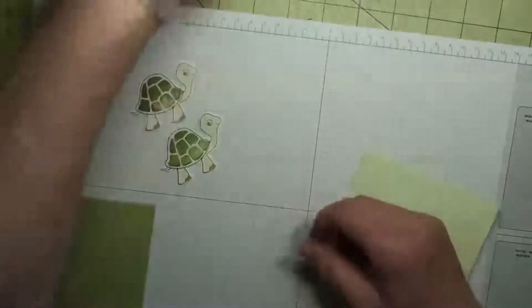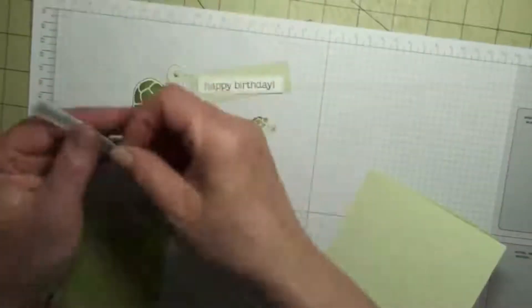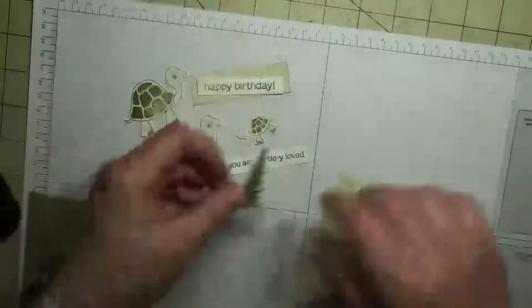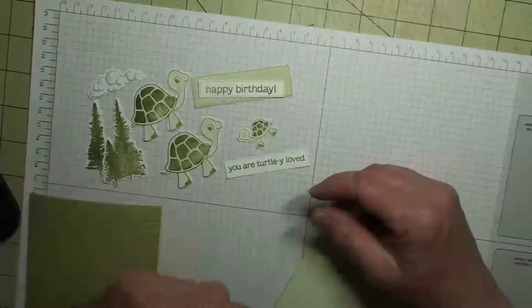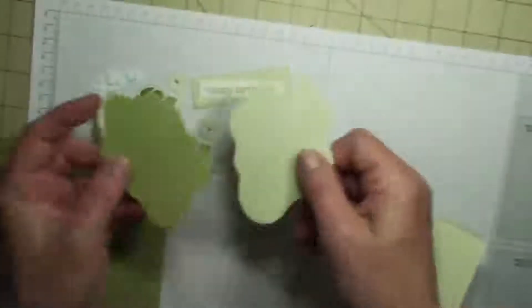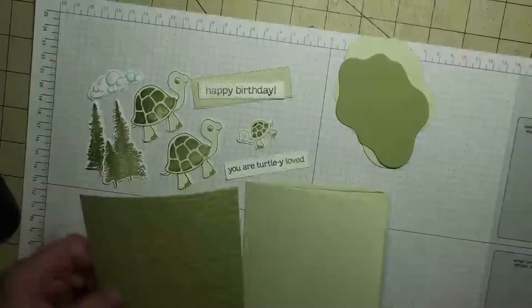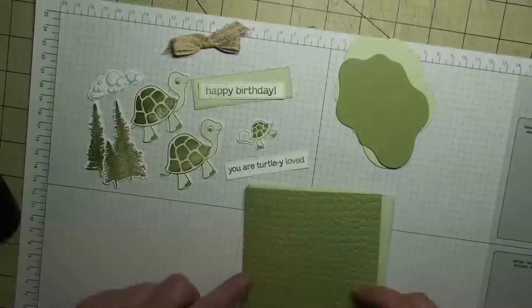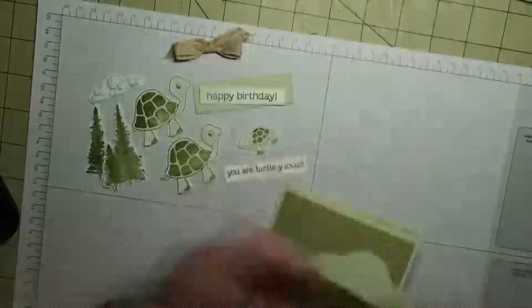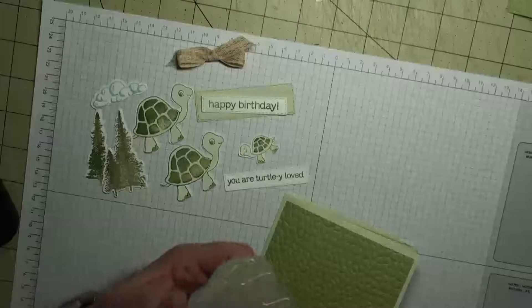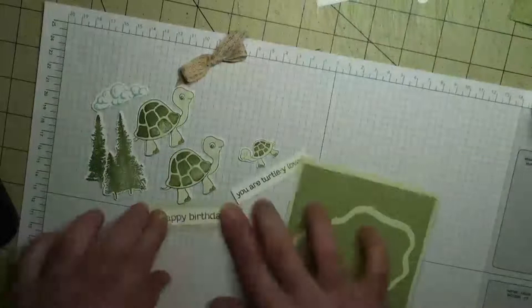I've already stamped two big turtles, one little turtle, a happy birthday, you are turtley loved. I've stamped and die cut two trees and a cloud. And then of course we've got our inserts from our layering diorama and our hammered metal piece and our bow.